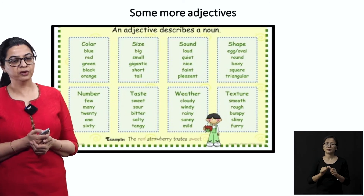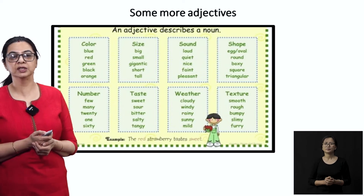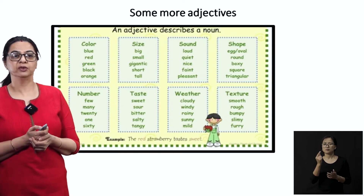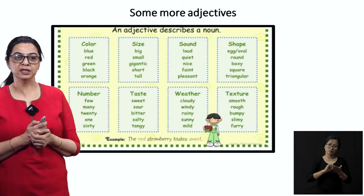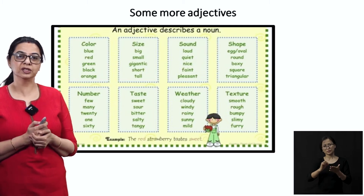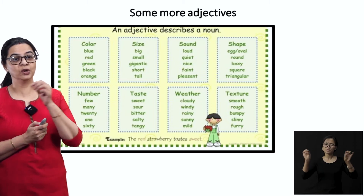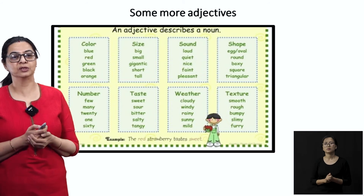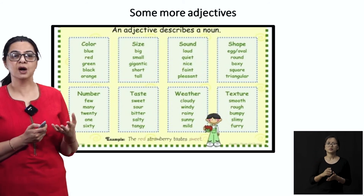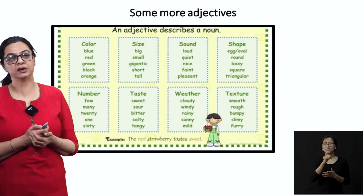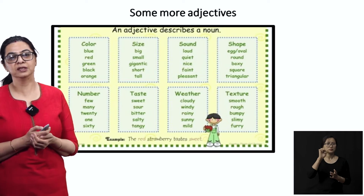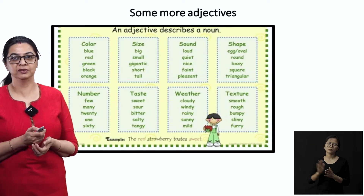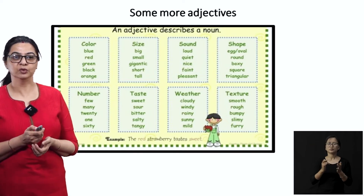So whenever you want to use an adjective, this is where you can note it down. If you want to write a sentence and want to use or underline an adjective, always ask the question: how is it being described? The word that describes is going to be your adjective.